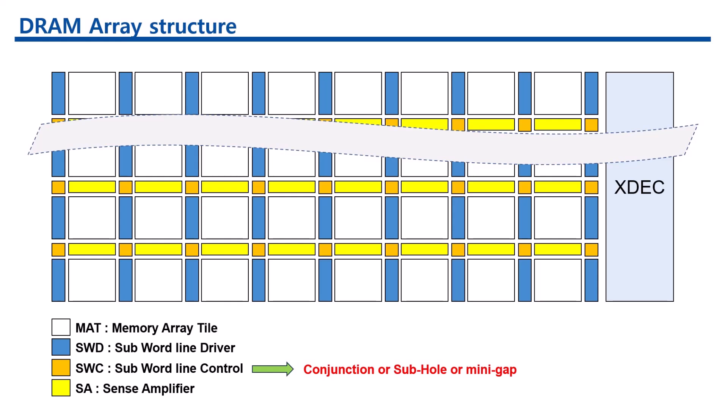SWD, subwordline driver, is responsible for driving the word lines within a specific section or segment of the memory array. SWC, subwordline control, manages the control signals for the SWD, ensuring proper selection and timing.